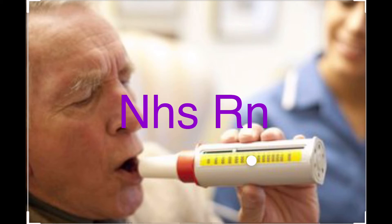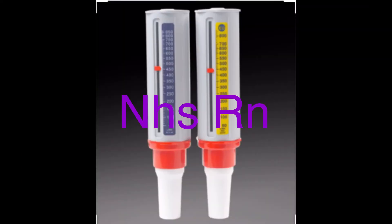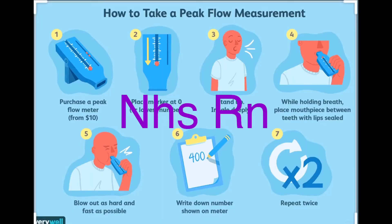Explain to the patient what you are going to do with the meter. You can say: 'You must hold it horizontally and keep your fingers away from the gauge when you blow into it.' When the patient holds their fingers on the gauge, it can affect the reading, so make sure they are not touching the gauge part.